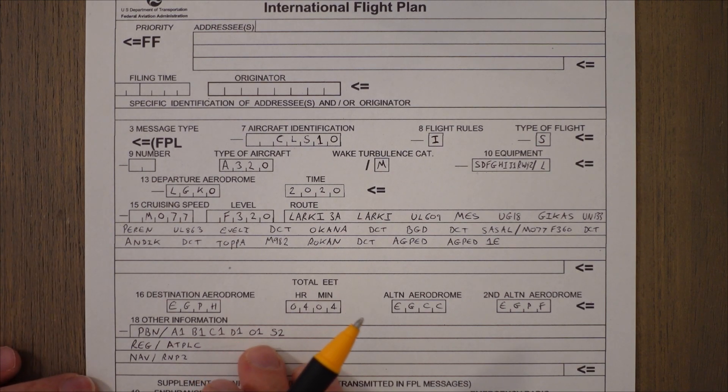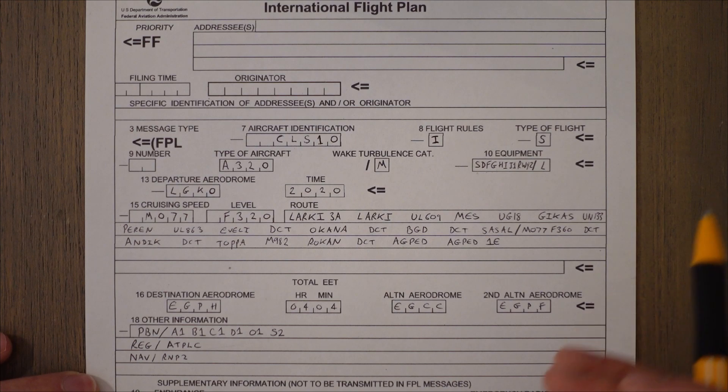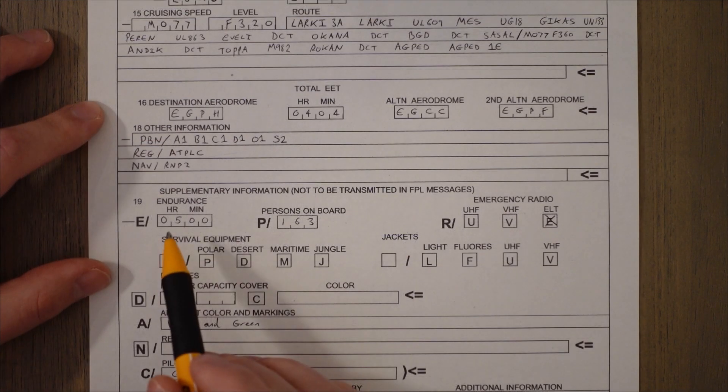And then S2 indicates that we can fly PBN based approaches but only if we use the altimeter barometric altitude rather than any GPS altitudes. This might all mean absolutely nothing to you at the moment but at some point it will make sense, probably after you've studied radio navigation and aircraft general knowledge.